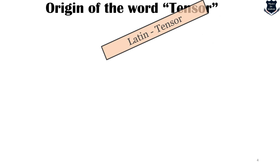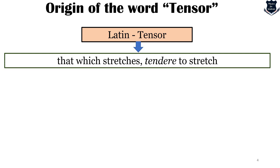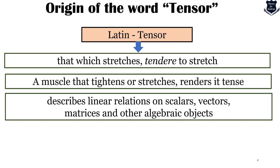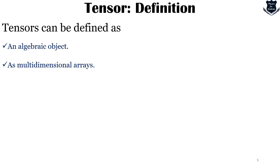The word tensor comes from the Latin word 'tendere' or 'tensor', which means basically to stretch. It relates to muscles of the body and describes linear relations on scalars, vectors, matrices and other algebraic objects. The root of the word tensor relates to stretching, and you will see that in general theory of relativity, solid state physics, and continuum mechanics the word tensor relates to something related to stretching — not stretching your hand or shirt, but stretching of coordinate systems or a kind of measurement.